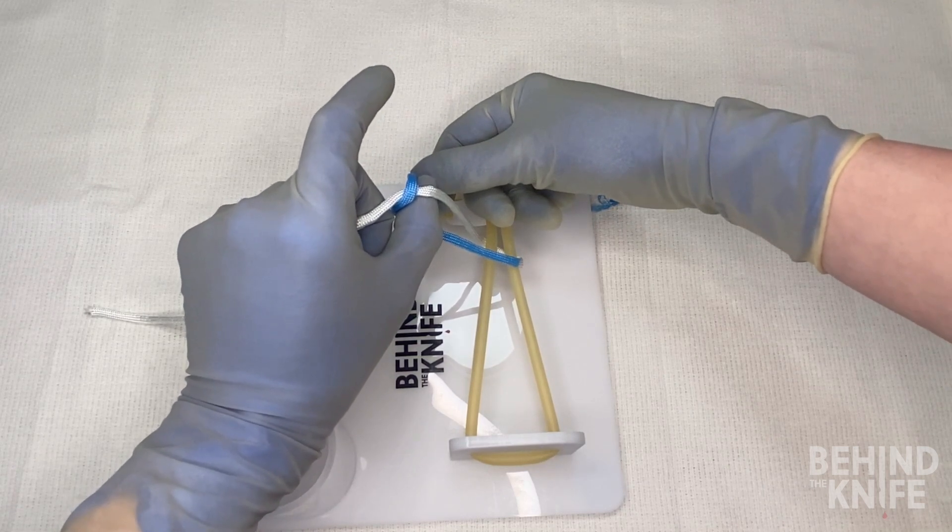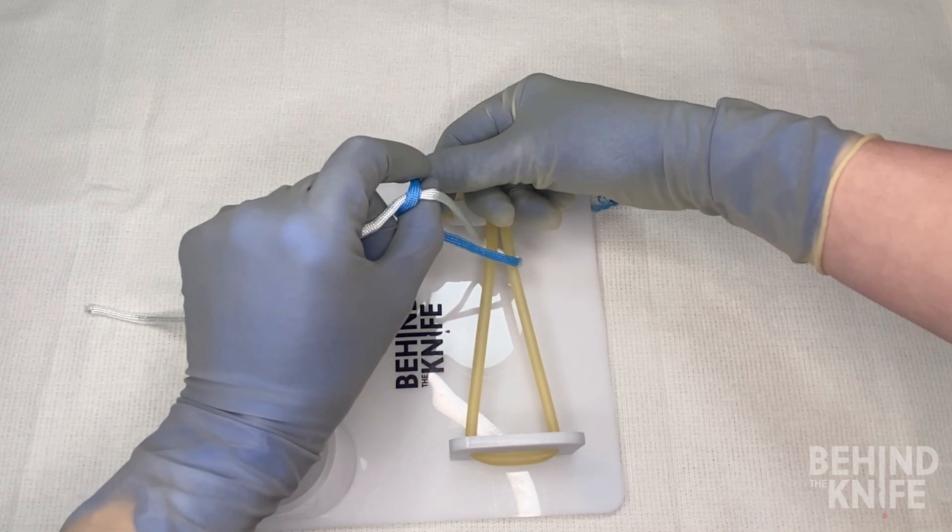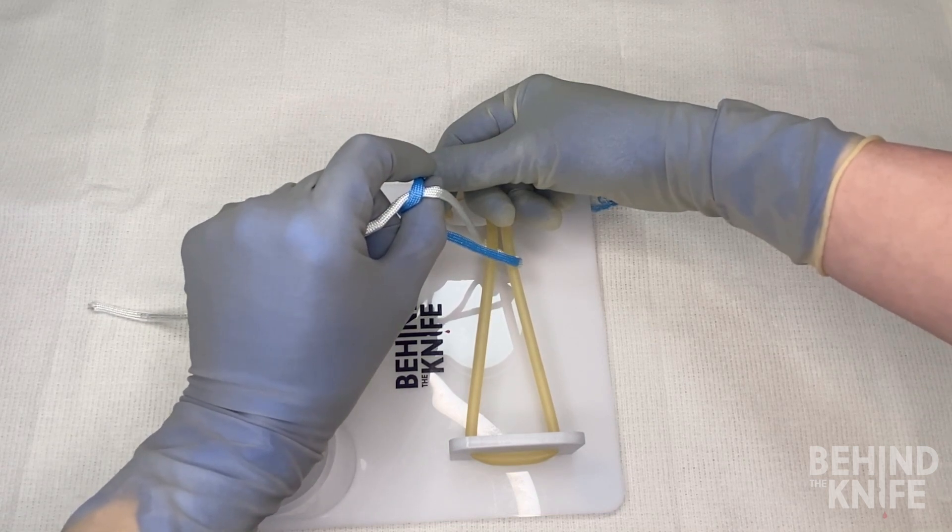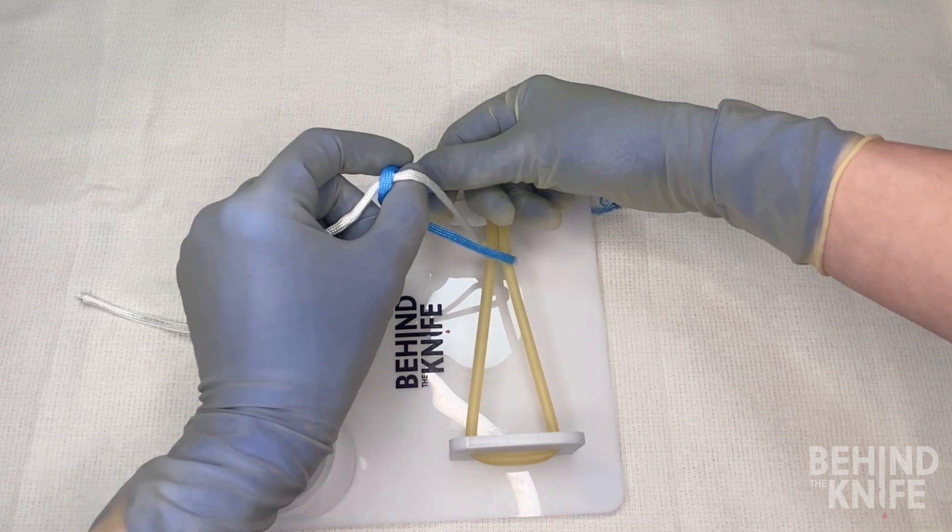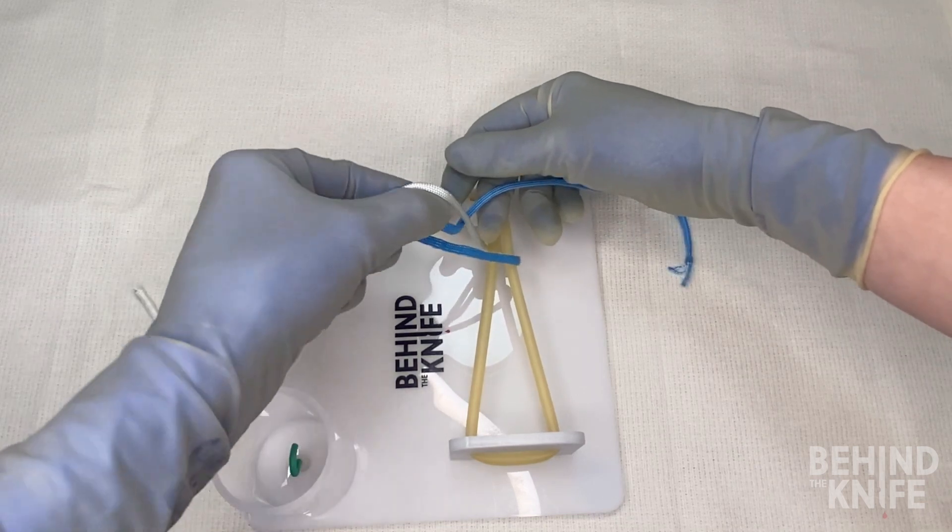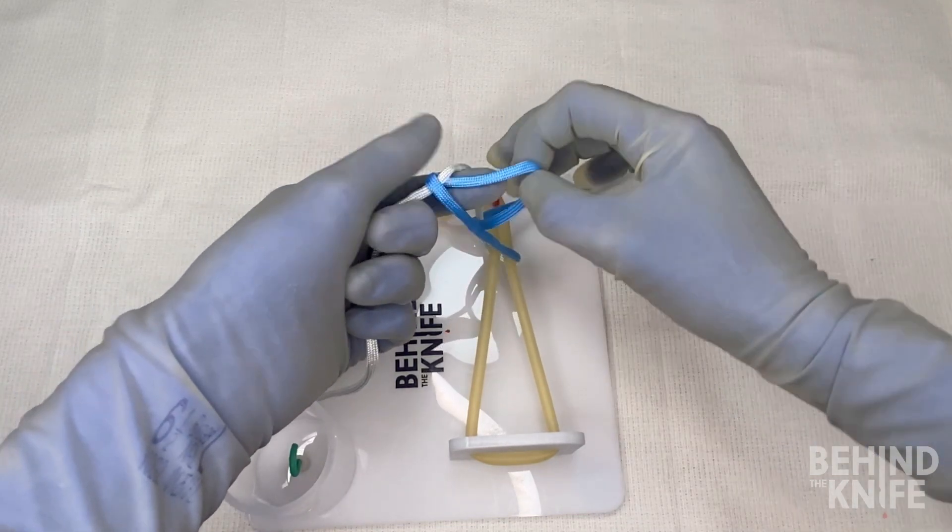From here, we'll once again pinch our index finger and our thumb together, this time with the blue end of our string in between, and we'll rotate our fingers back to where we started, bringing the blue side of the string with us.